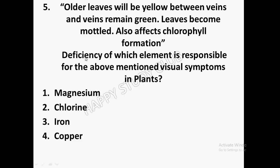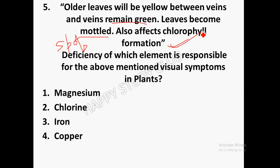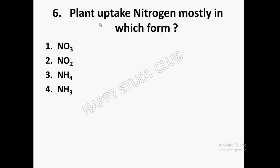Next deficiency question: Older leaves will be yellow between veins while veins remain green, leaves become mottled with some spots, and chlorophyll formation is also affected. The deficiency of magnesium is responsible for these symptoms in plants.